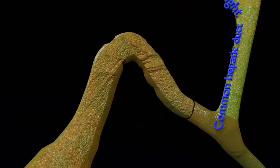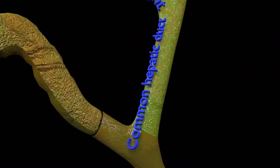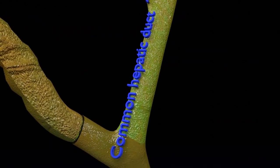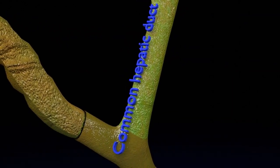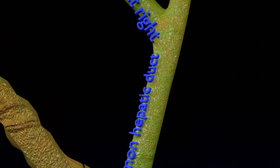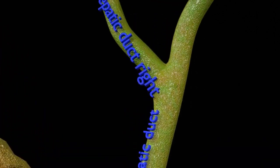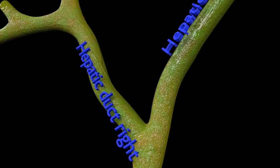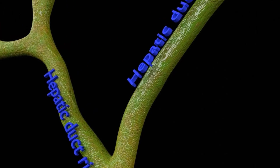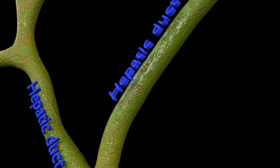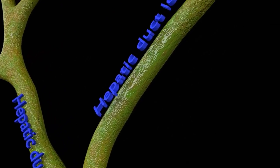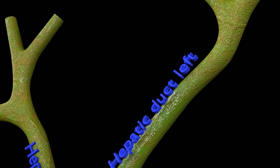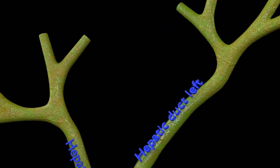Here, you are able to see the common hepatic duct formed by the convergence of the right hepatic duct, which drains bile from the right functional lobe of the liver, and the left hepatic duct, which drains bile from the left functional lobe of the liver.